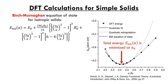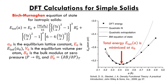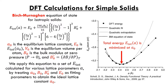A well-known mathematical treatment of total energy versus lattice constant is the Birch-Murnaghan equation of state for isotropic solids. In this equation, A0 is the equilibrium lattice constant, E0 is the minimum total energy at A0, V0 is the equilibrium volume per atom, B0 is the bulk modulus at zero pressure, and B' is the partial derivative of the bulk modulus with respect to pressure at constant temperature. We apply the Birch-Murnaghan equation to a set of calculated E_total values for a range of lattice parameters A, treating A0, B0, B', and E0 as fitting parameters to obtain the ideal lattice constant.